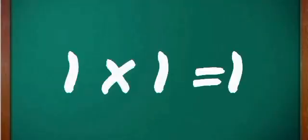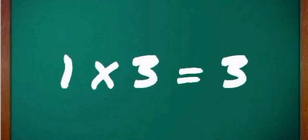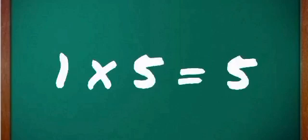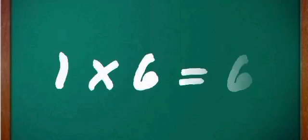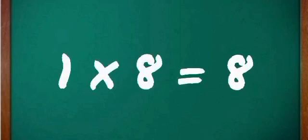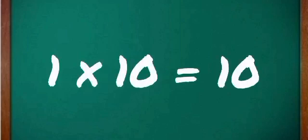1 one's a 1, 1 two's a 2, 1 three's a 3, 1 four's a 4, 1 five's a 5, 1 six's a 6, 1 seven's a 7, 1 eight's a 8, 1 nine's a 9, 1 ten's a 10.